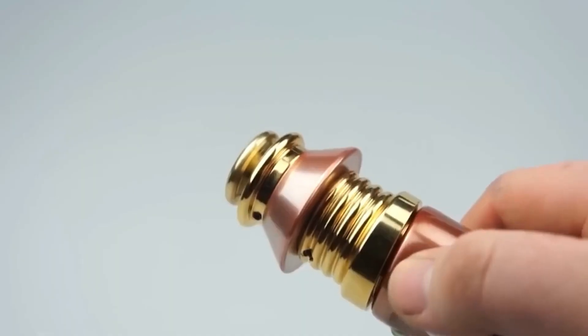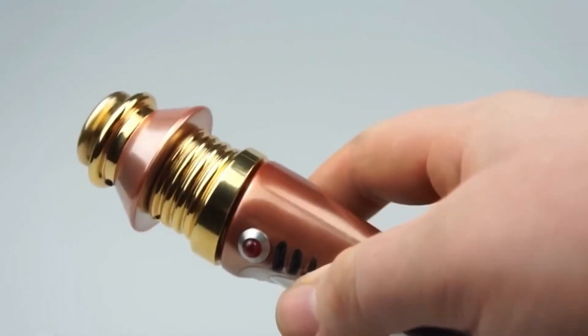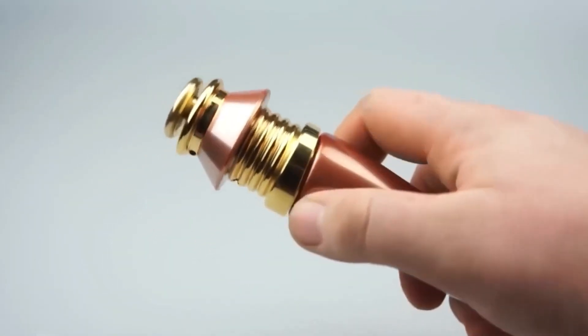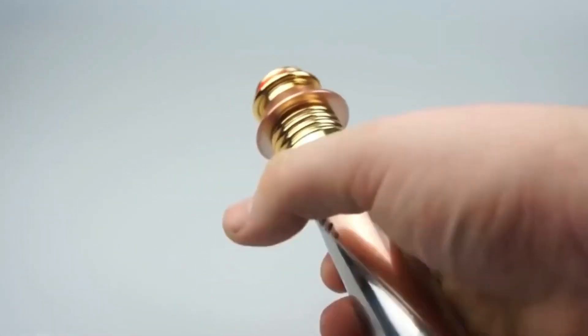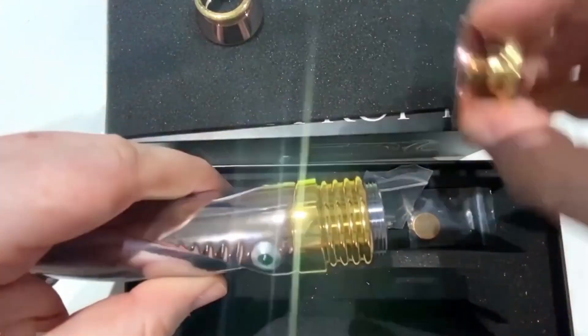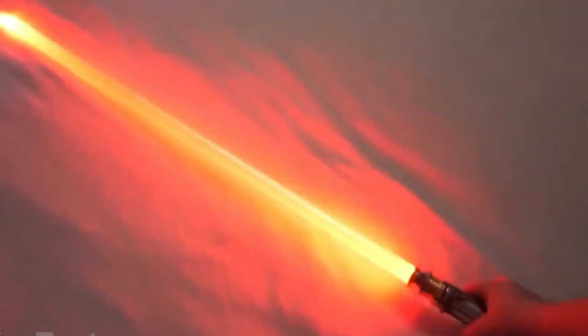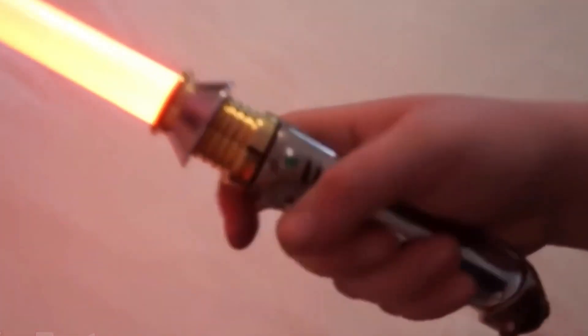The switch on the hilt activates sound effects and LED lights for a more realistic experience. Thanks to the step-by-step video guide, the assembly won't take you long. But no matter what, you should stay on the light side.